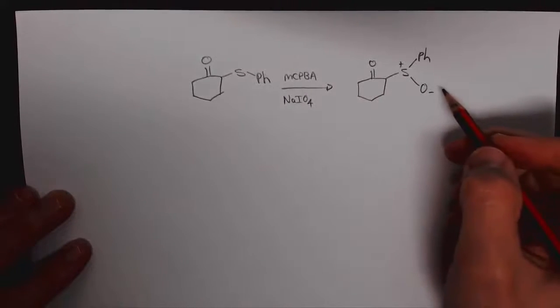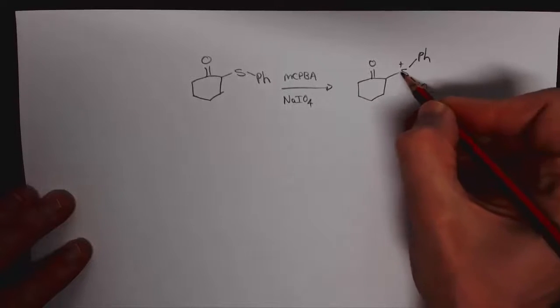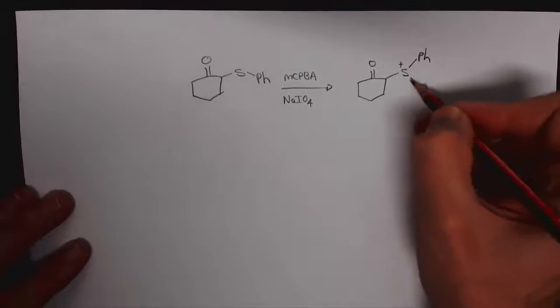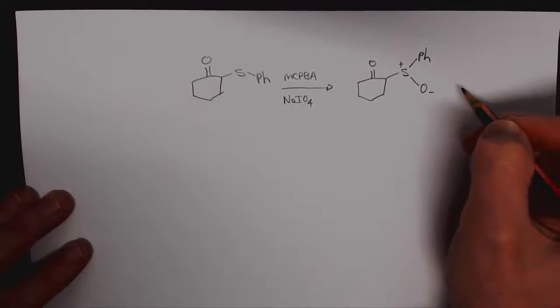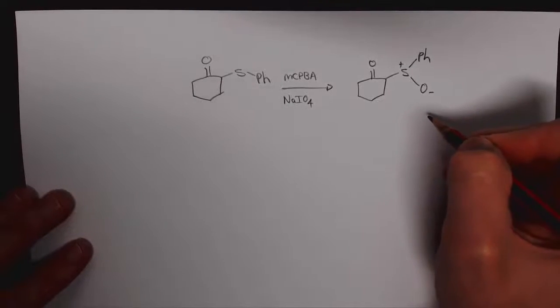I've drawn it out this way as you'll see now just why I've drawn it this way. We can draw sulfoxides with a double bond to oxygen and sulfur so then there's no charges or we can draw it like this, both are completely acceptable. But you're going to see now why drawing it this way is just going to help us do what we're going to do next.